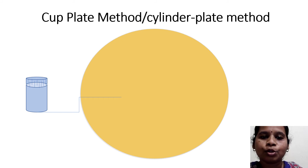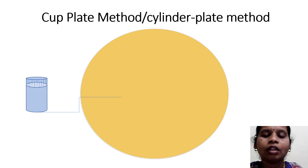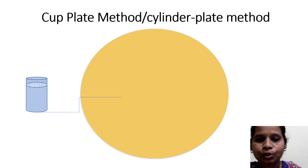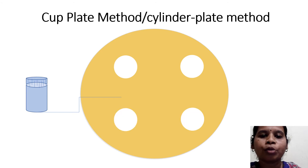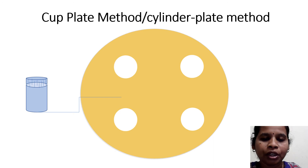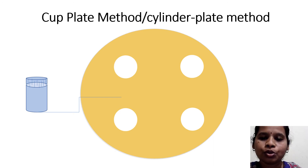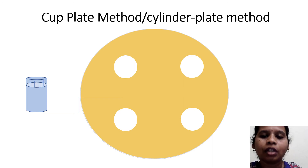Then we are supposed to use a borer to create cavities in the agar medium. This boring will form cup-like structures inside the medium, or we can use cups which will be kept in these circular areas made with the borer.